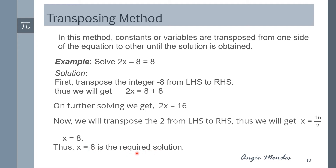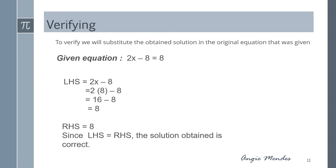Again we verify this solution. The given equation was 2x minus 8 equal to 8 and we got x equal to 8. Substituting: the left hand side is 2 times 8 minus 8, which is 16 minus 8, giving 8. The right hand side is also 8. Since right hand side equals left hand side, the solution is correct.